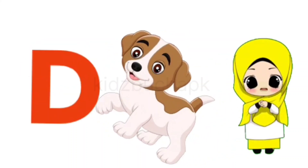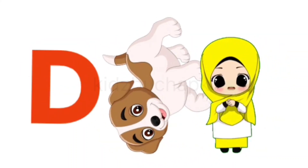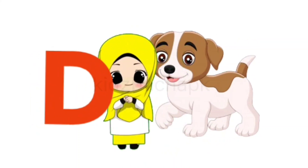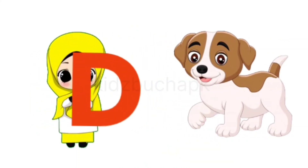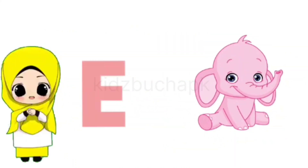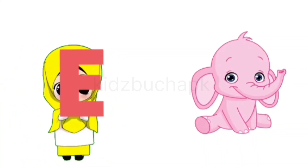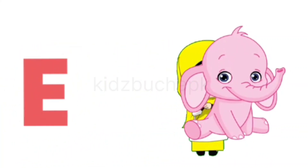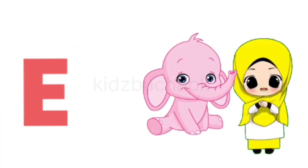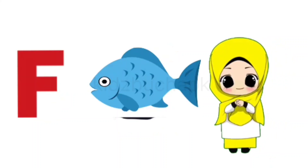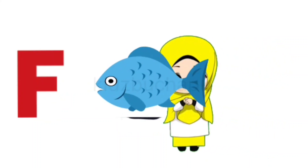D for Dog, Dog means Kutta. E for Elephant, Elephant means Hathi. F for Fish, Fish means Machli.